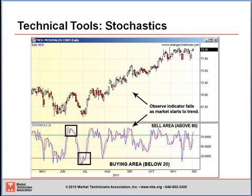Notice also that when the big move up in McDonald's started — when the stock went from 75 to roughly 78 — the stochastic moved up into the 80–90 area and essentially got stuck. Notice that the sell signals on the indicator failed as the market started to trend. This is why we say you should use the stochastic signals only in the direction of the trend.